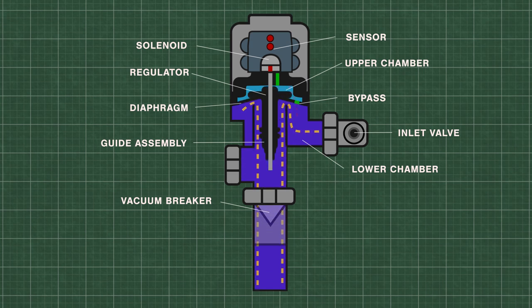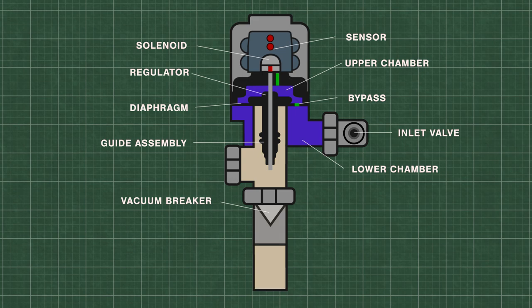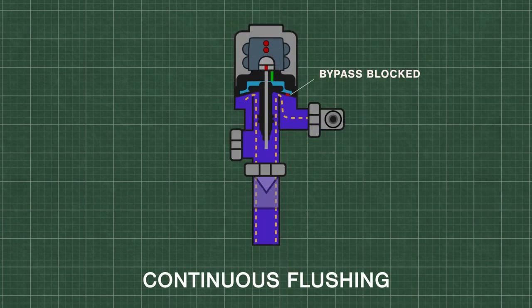During the flush, some of the water is forced back into the upper chamber through a small bypass hole in the diaphragm. The flush continues until the pressure equalizes and pushes the diaphragm down onto the valve seat. The bypass hole size is extremely important for proper metering of water. Continuous flushing can happen when the bypass is clogged with dirt or debris.